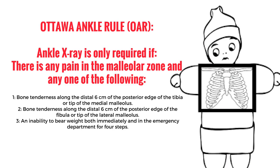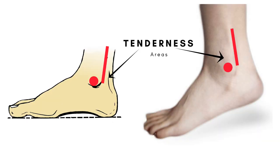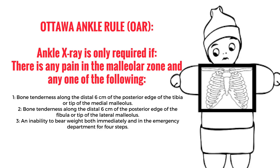So what is the Ottawa Ankle Rule? An ankle x-ray is only required if there is pain in the malleolar zone and any one of the following: one, bone tenderness along the distal six centimeters of the posterior edge of the tibia or tip of the medial malleolus; two, bone tenderness along the distal six centimeters of the posterior edge of the fibula or tip of the lateral malleolus; three, an inability to bear weight both immediately and in the emergency department for four steps.